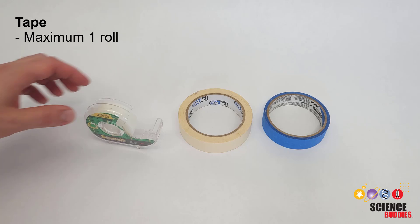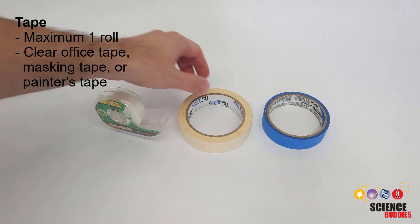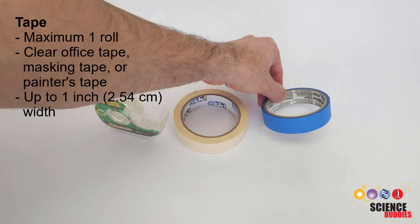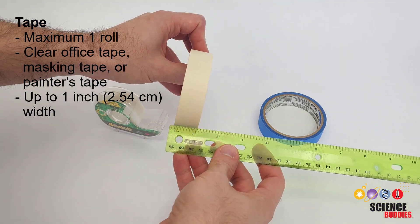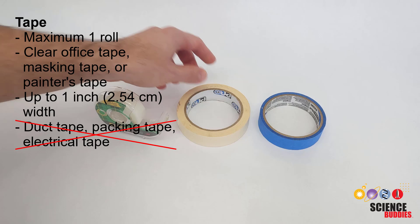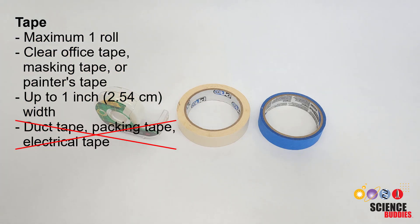Finally, you can use up to one roll of clear office tape, masking tape, or painters tape with a maximum width of one inch or 2.54 centimeters. Other tapes like duct tape, packing tape, and electrical tape are not allowed. Tape is free, meaning it has a cost of zero points for the roll.